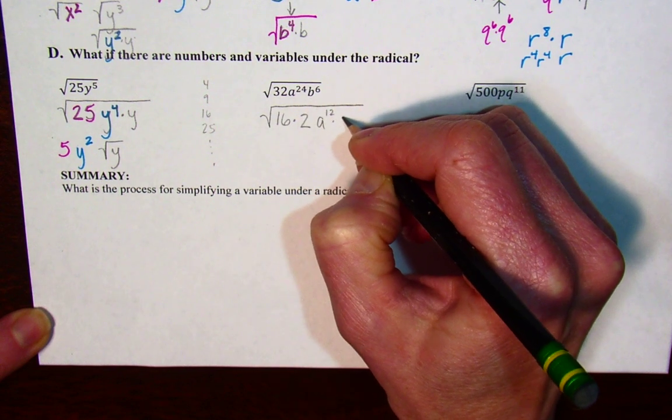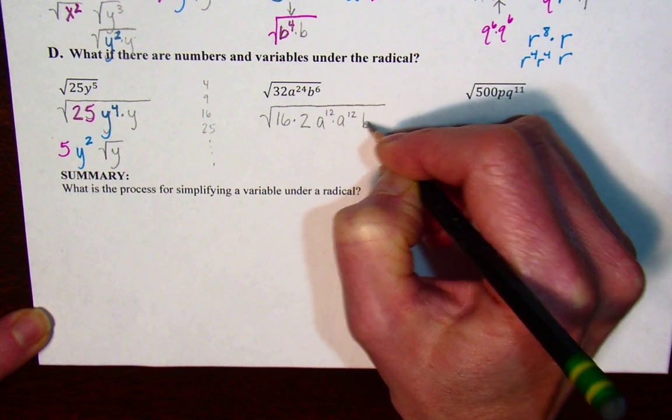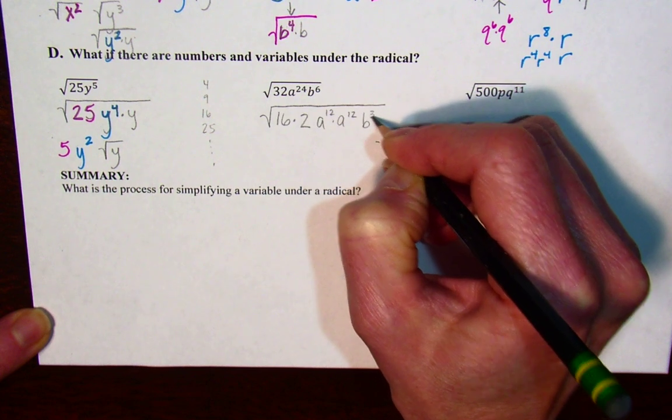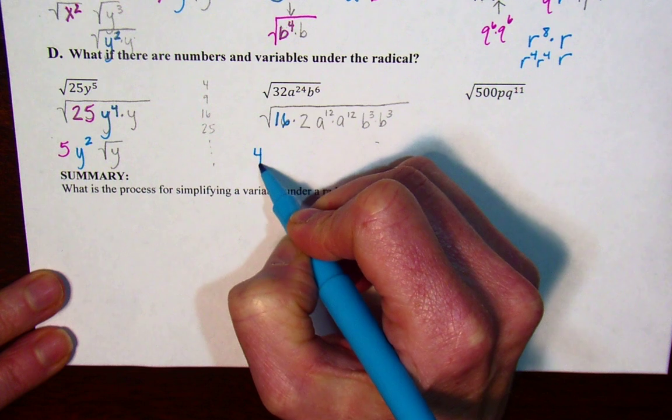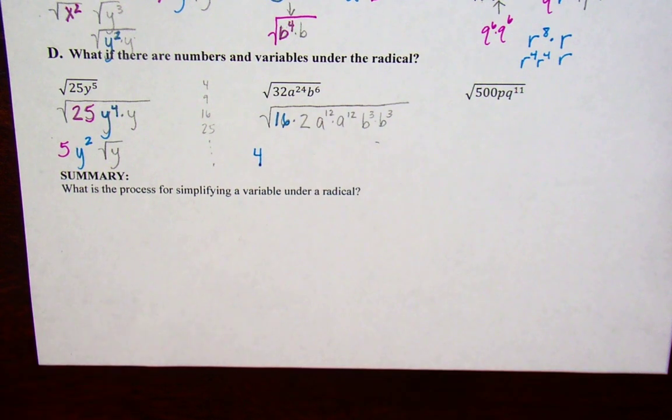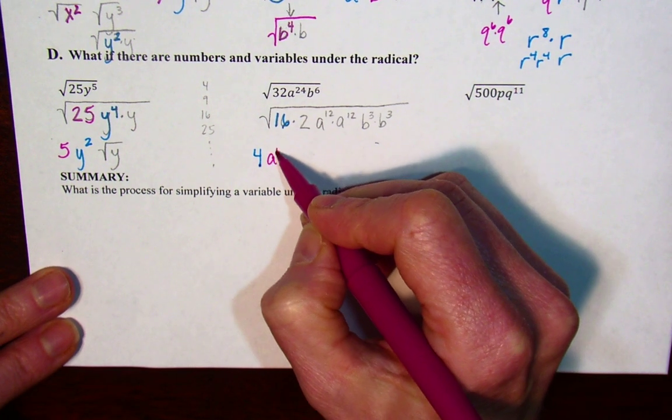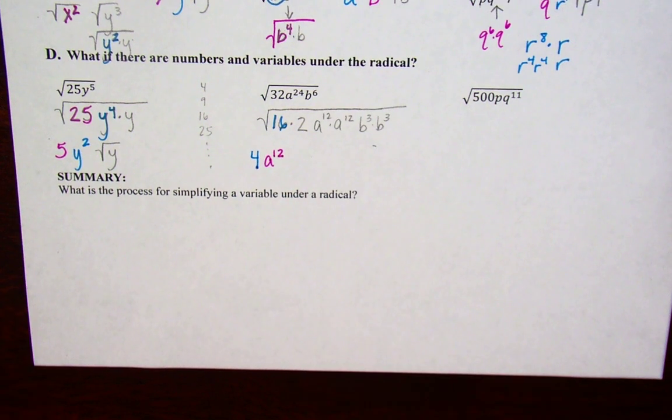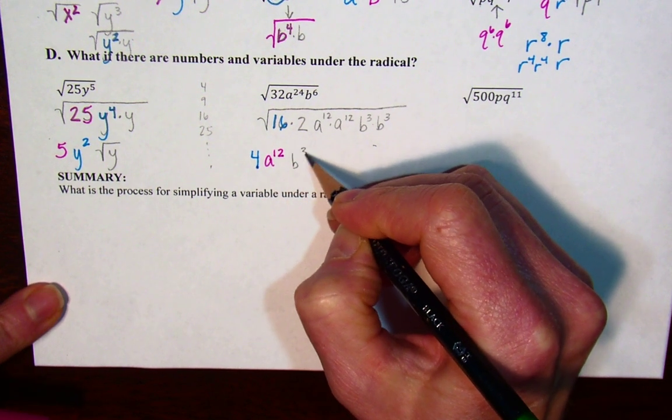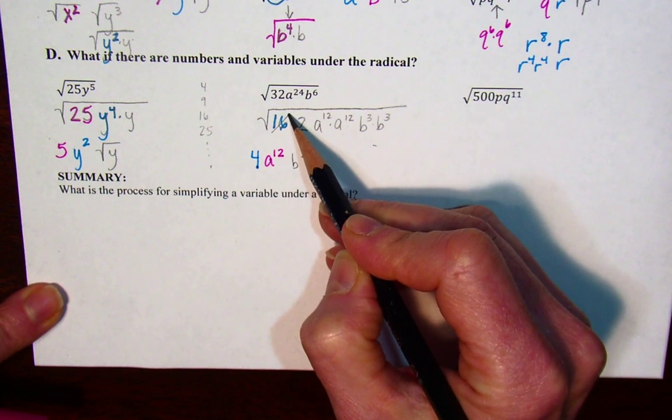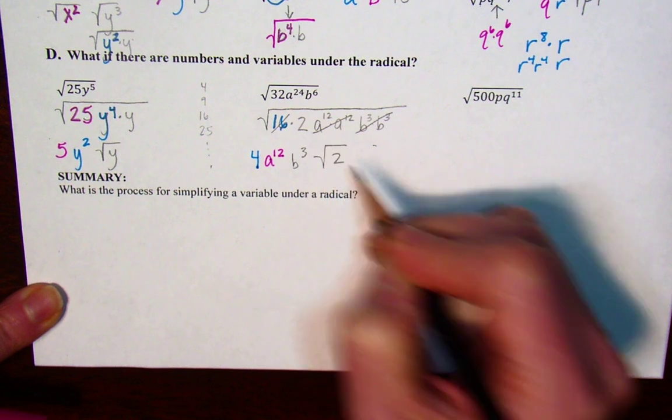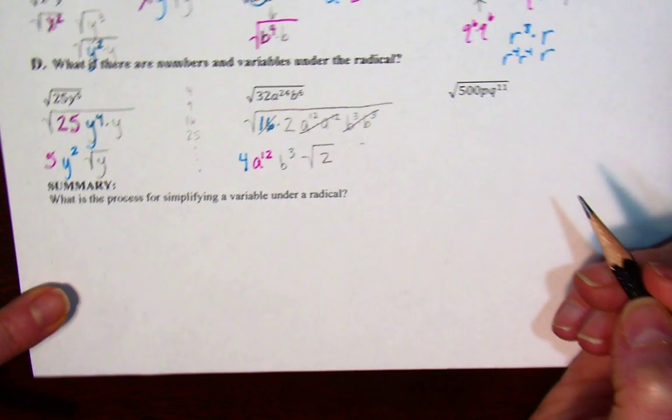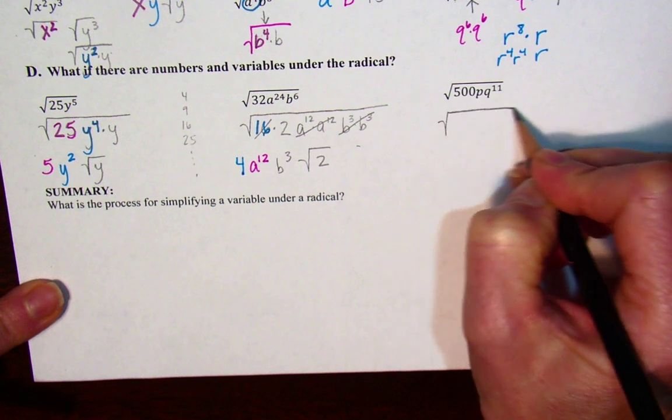And aren't I lucky that a to the 24th is an even number and b to the sixth is an even number. The square root of 16 is 4, then we have a to the 12th, then we have b cubed, and there's a root 2 left over.